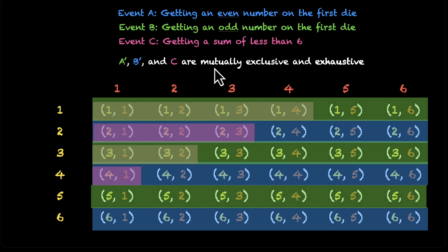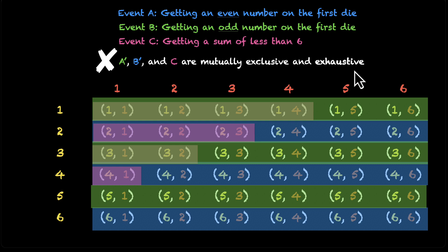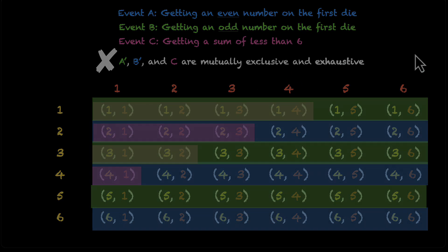But the statement claims they are mutually exclusive and exhaustive. Let's check the exclusive part: is there any overlap? There is no overlap between green and blue, but the pink zone (event C) overlaps with both A' and B'. So C overlaps with A' and C overlaps with B', meaning they are not mutually exclusive. This statement is false — A', B', and C are exhaustive but not mutually exclusive and exhaustive.